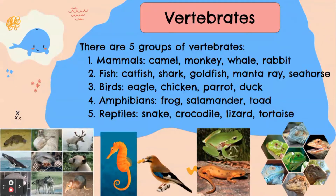4. Amphibians. The examples of amphibians are frog, salamander, and toad. 5. Reptiles. The examples of reptiles are snake, crocodile, lizard, and tortoise.